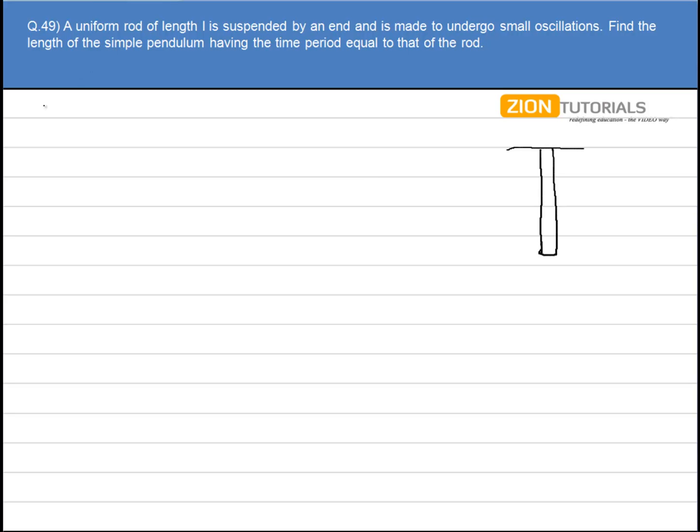So we know the time period of a physical pendulum is given by 2π under root of moment of inertia of the physical body about the point of suspension divided by mgL. This L is the distance of the center of mass from the point of suspension. Let's say this is my distance L.